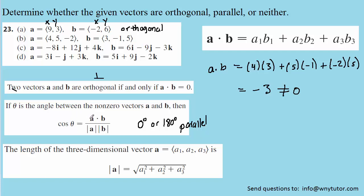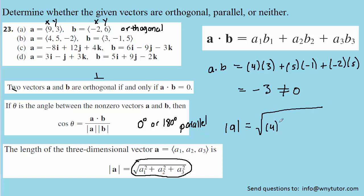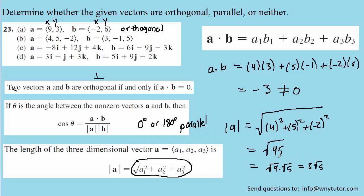In that formula, we have the dot product between a and b, which we just determined was negative 3. We also need the magnitudes of vectors a and b. To find the magnitude, we square the components, sum them, and take the square root. For vector a in part b, we take the square root of 4 squared plus 5 squared plus negative 2 squared, which gives us the square root of 45. Simplifying: square root of 9 times square root of 5 equals 3 root 5. That is the magnitude of vector a.